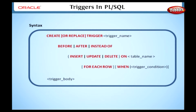We can specify BEFORE, AFTER, or INSTEAD OF in the trigger definition. BEFORE specifies that the trigger fires before executing the triggering event; for a row trigger, it fires before each affected row is changed. AFTER specifies that the trigger fires after executing the triggering event; for a row trigger, it fires after each affected row is changed. INSTEAD OF tells Oracle to fire the trigger instead of executing the triggering event — these triggers are activated for each row by default, and Oracle fires them instead of performing DML statements on the view.